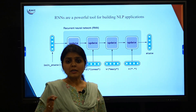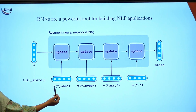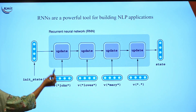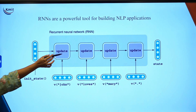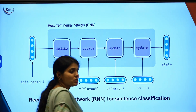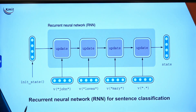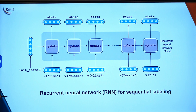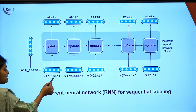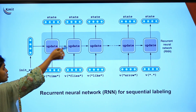For processing sequential data we use recurrent neural networks. In the earlier classes we discussed feeding a sentence as input, performing word tokenization, and each word is given to the update function, updated, and finally we get the state as output. We also saw how to use RNN for sentence classification, where once a sentence is given as input we get one output — for example, positive or negative, spam or not spam. For sequential labeling, we take each word and instead of one output at the end, we get corresponding states as output for every word.